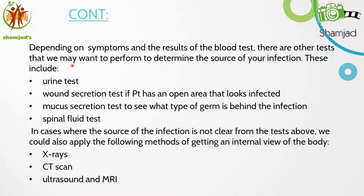Depending on symptoms and blood test results, there are other tests we may want to perform to determine the source of infection. These include a urine test, culture and sensitivity of the urine, wound secretion test, culture from the wound if there is any open infected wound, and mucosecretion test to determine the type of germ behind the infection.